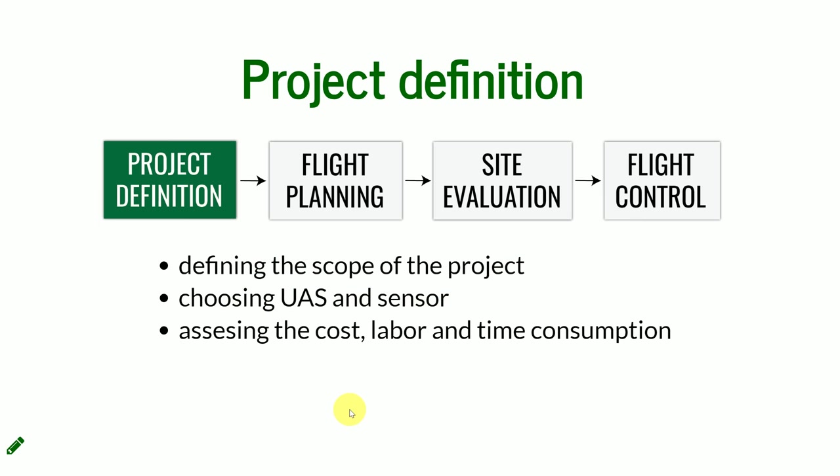Even if you know it's within your capabilities, you need to assess how much time it takes to fulfill all the requirements of the project. The next step, even before you try to use the planning software, is to collect the main information about the terrain. Check if you haven't been there before — if you are considering a new terrain, you need to check if it's even possible from the legal point of view to fly there, or if it's accessible, from sources you can gather like Google Maps or OpenStreetMap.